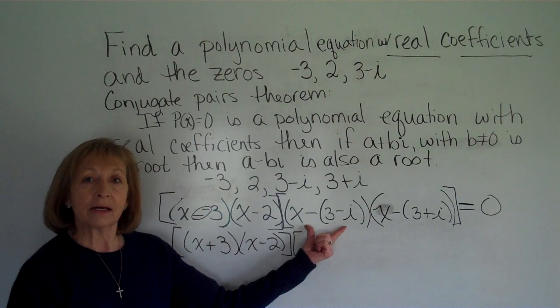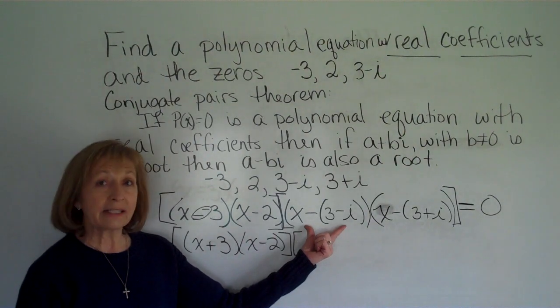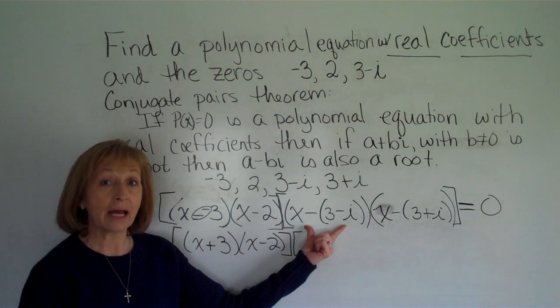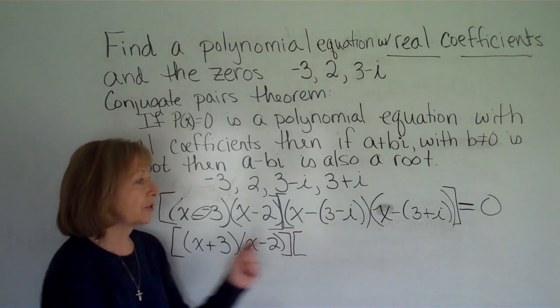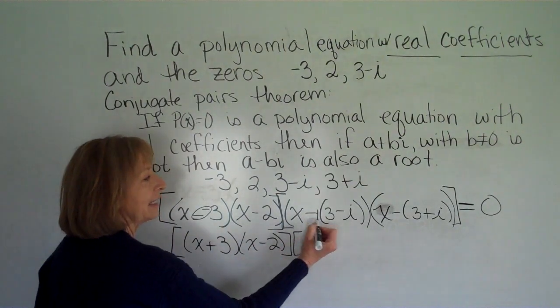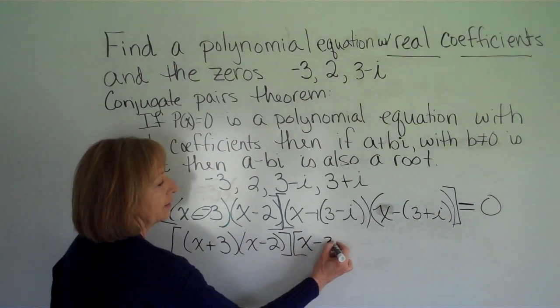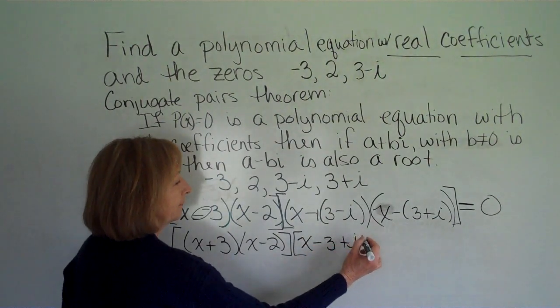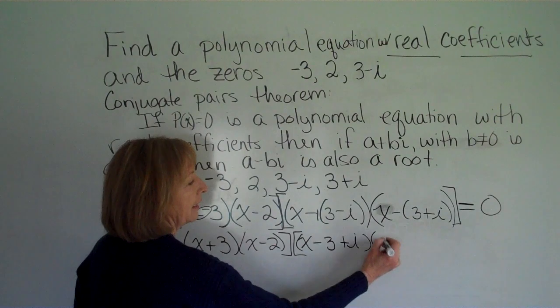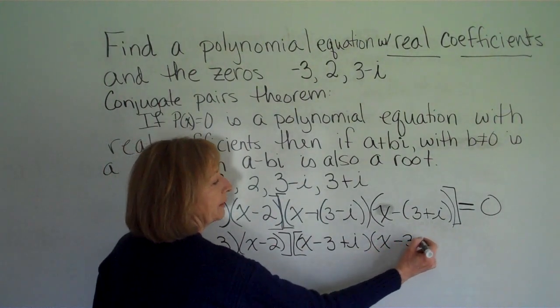And in the factors that have the non-real complex numbers in them, we want to distribute this negative one through the parentheses, so this will be x minus 3 plus i and x minus 3 minus i.